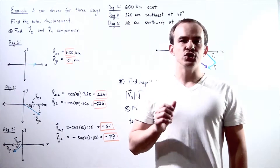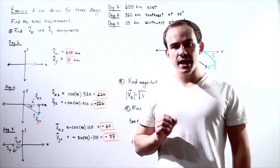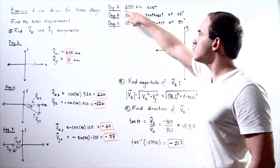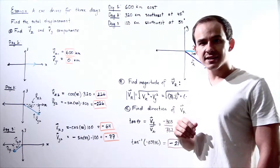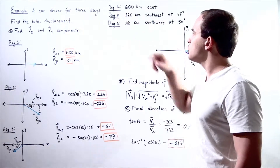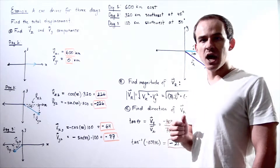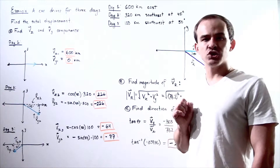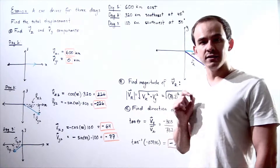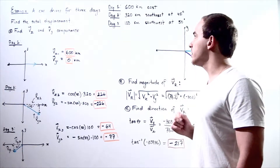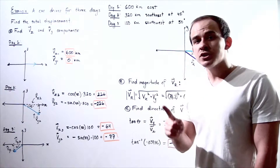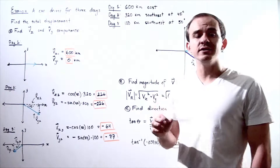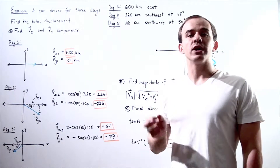Suppose we get into a car and drive for three days. During day one, we drive 600 kilometers east along the x-axis. During day two, we drive 320 kilometers southeast at an angle of 45 degrees with respect to our x-axis. And finally, during day three, we drive 100 kilometers southwest at an angle of 50 degrees with respect to our x-axis.